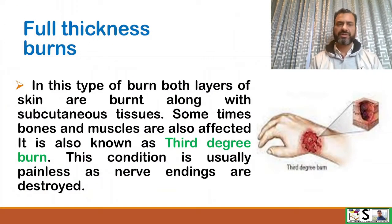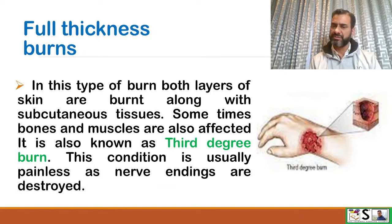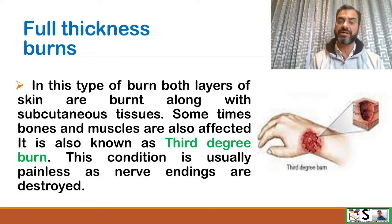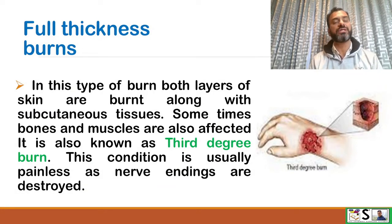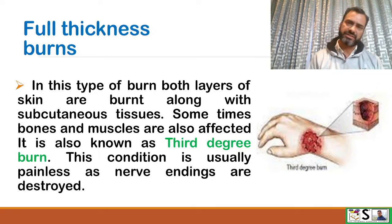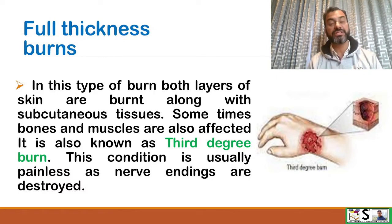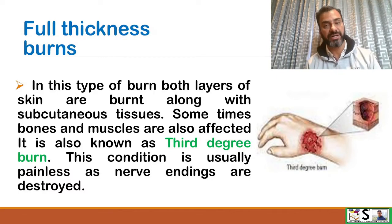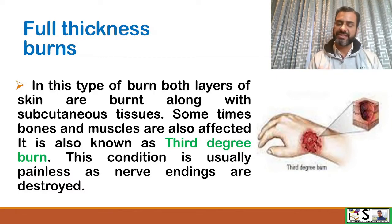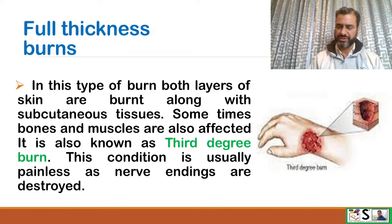Full thickness burn. In this type of burn, both layers of skin are burned along with the subcutaneous tissue. Sometimes bones and muscles are also affected. This is also known as third degree burn, and this condition is usually painless as the nerve endings are also destroyed.